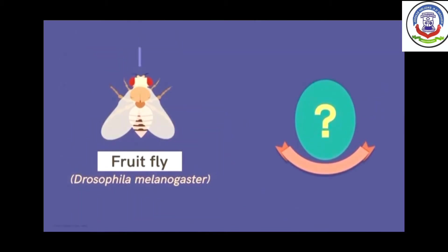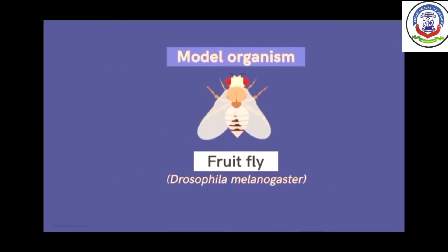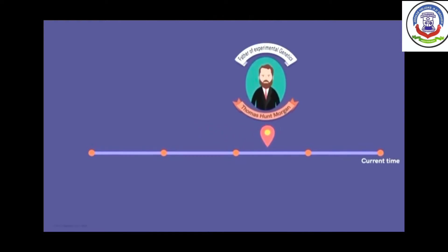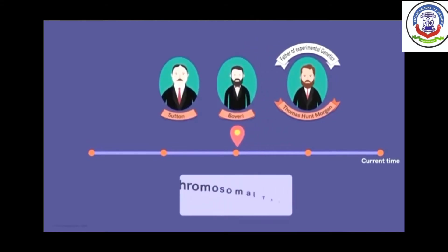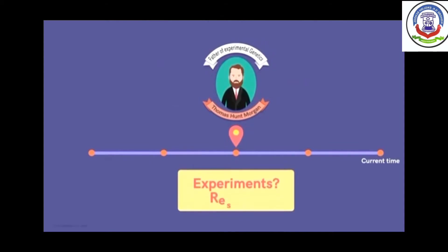The use of Drosophila melanogaster as a model organism dates back several years. However, it rose to fame through the experiments of the father of experimental genetics, Thomas Hunt Morgan. Following Boveri and Sutton's chromosomal theory of inheritance, Morgan and his colleagues carried out many experiments on the common fruit fly, which served as further confirmation for the theory.